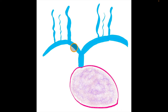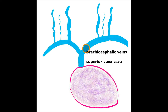Dropping blood into the superior vena cava are the right brachiocephalic vein and the left brachiocephalic vein. Keep in mind that with arterial flow, blood moves away from the heart, but here blood is moving toward the heart — veins merge toward each other into a larger vein, whereas arteries diverge away from the heart.